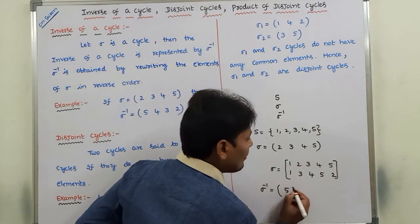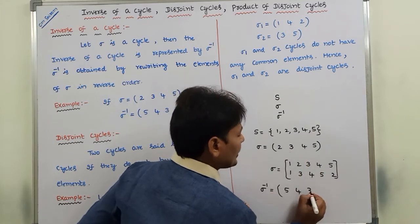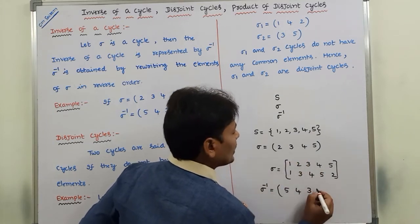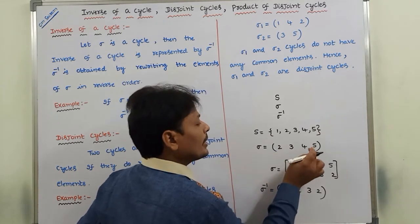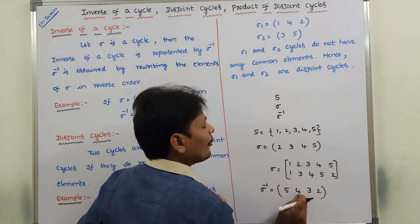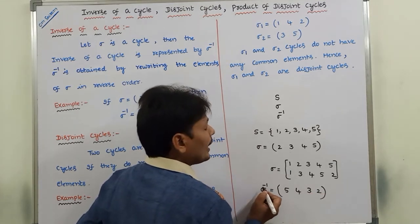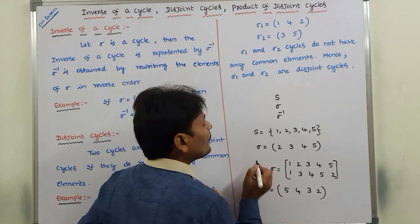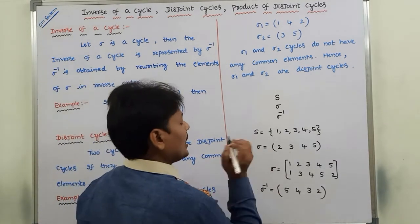So sigma inverse is written by reversing the elements: (5, 4, 3, 2). Then sigma inverse is called the inverse of sigma, the inverse of a cyclic permutation sigma.